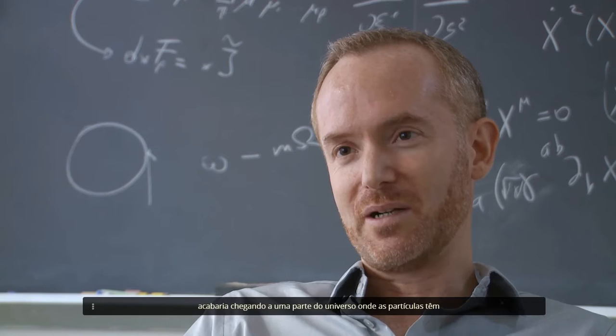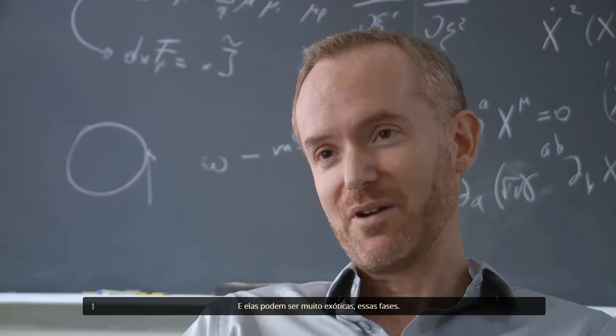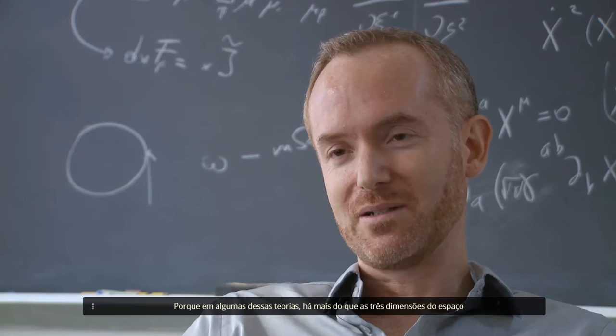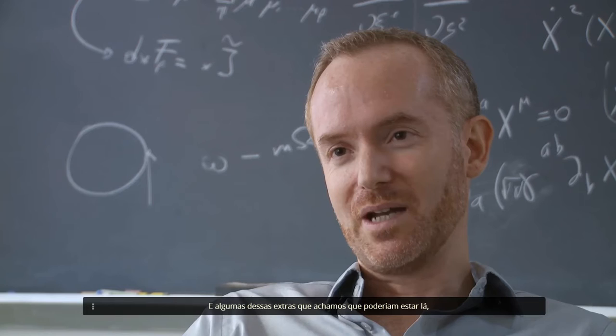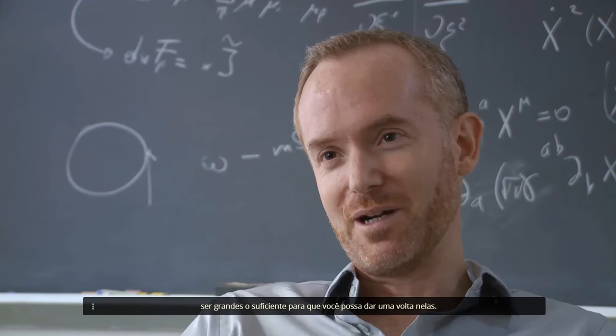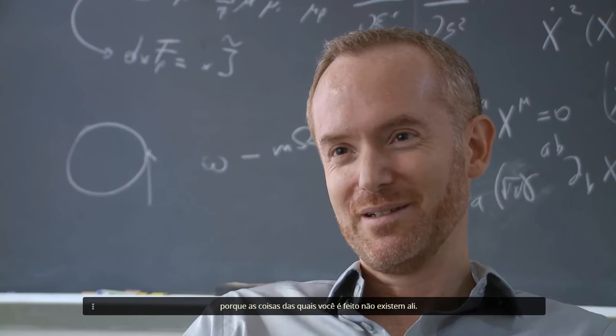So if you were to go far enough in a straight line, you'd eventually come to a part of the universe where the particles have very different properties. And those can be very exotic, those phases. You can have different numbers of large dimensions, even. Because in some of these theories, there's more than the three dimensions of space that we're used to. And some of those extra ones that we think they're maybe there, but they're too small for us to see. They might actually be large enough that you could take a walk in them. Only you wouldn't be able to take a walk in them because the stuff you're made of doesn't exist over there. So these phases can be very exotic, very different from what we see around us.